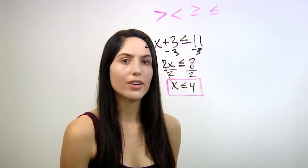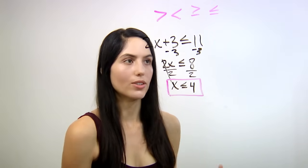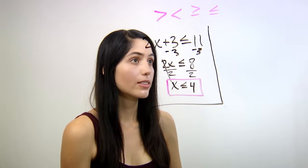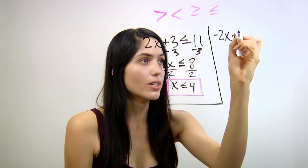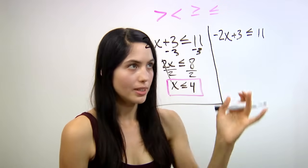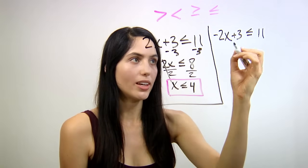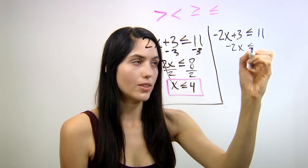Now let's look at a tougher example where it's different from a normal equality equation. So you have negative 2x plus 3 is less than or equal to 11. First step, you do subtract 3 from both sides, and you have negative 2x is less than or equal to 8.